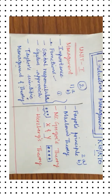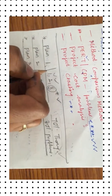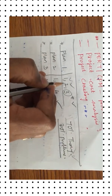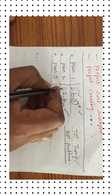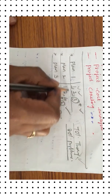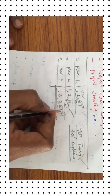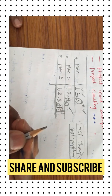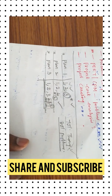The exam pattern has about 70 percent theory from the first 3 units and 30 percent problems from Units 4 and 5. Study plans: Plan 1 is for students looking only for pass marks — cover Units 1, 2, and 3, and if needed you can skip Unit 3 and just cover Units 1 and 2. Plan 2 is Units 1, 2, and 4 for students aiming for good marks. Students wanting the highest marks should compulsorily cover Units 1, 2, and 3, plus either Unit 4 or 5. Please work out the problems from Units 4 and 5 and hope you perform well and score better marks. Thank you — please like and subscribe to my channel.